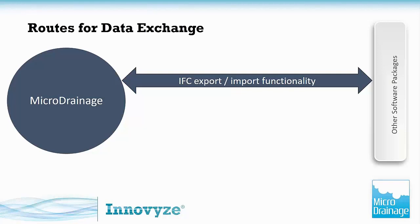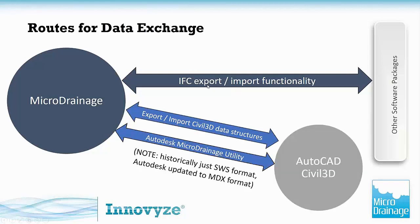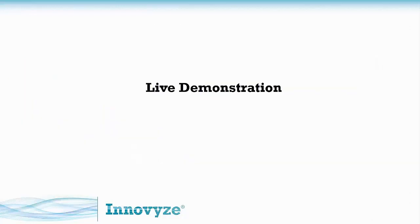In terms of routes for data exchange from Microdrainage, we are providing IFC export/import functionality for third-party packages such as Revit. At this stage we are pushing out from Microdrainage towards those packages, but not yet importing IFC back from Revit into Microdrainage. For the majority — about 70% of the audience working with Civil 3D — we are doing seamless import/export integration right now, and the historical dependency on the SWS format is no longer an issue.